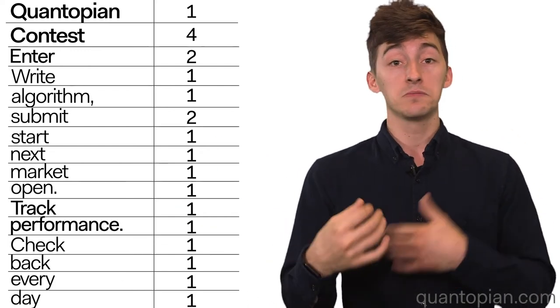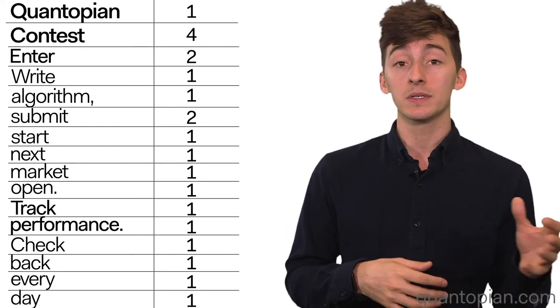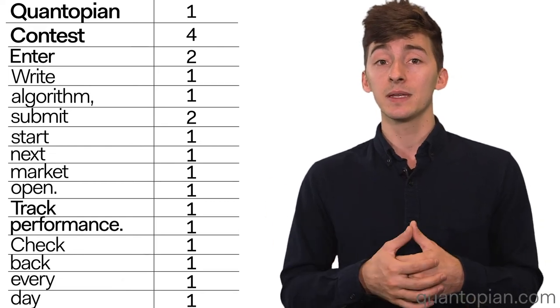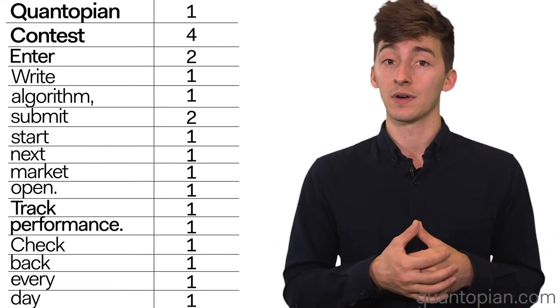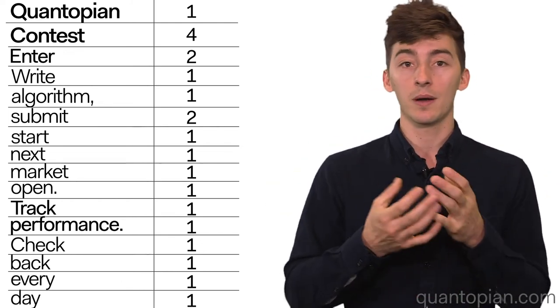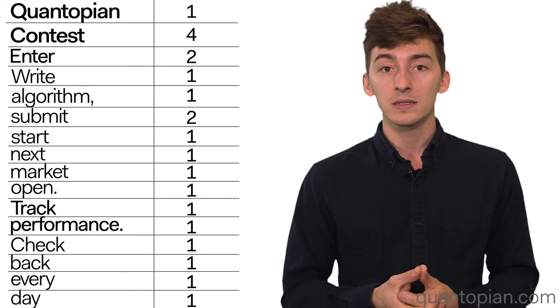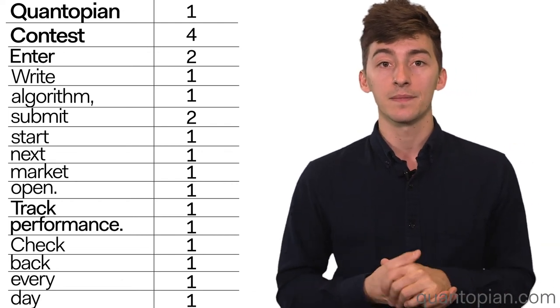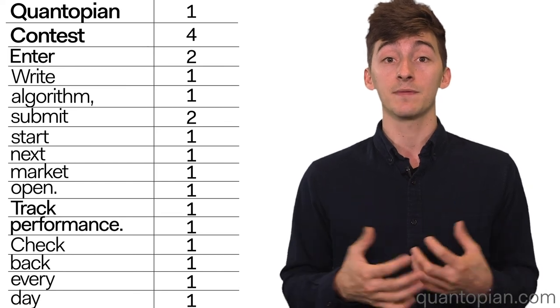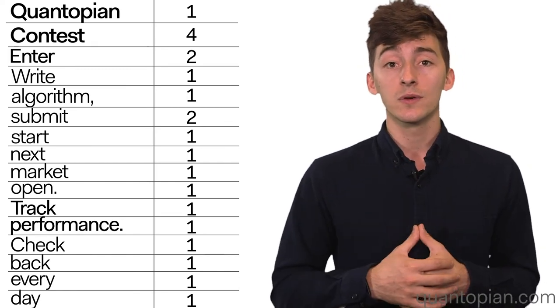Once we have this, we can use it for whatever modeling purposes we like. If we have labels such as positive or negative sentiment, we have the appropriate vectors for everything, so we can build a sentiment model using our feature matrix. If we want to predict something else about these documents, we can build a model for that. There are more complicated ways to quantify text, but we'll cover those in a later video.